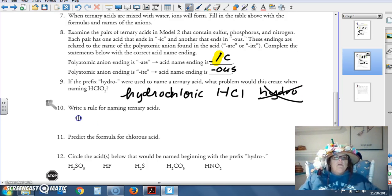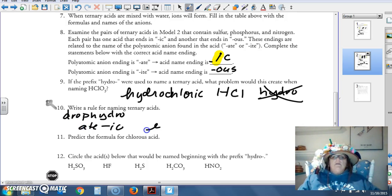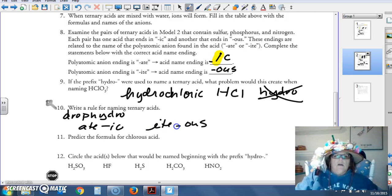The rule for naming oxy acids or ternary acids, we drop the hydro. If it ends in ate, we add ic. If it ends in ite, we feel ous because we ate too much.